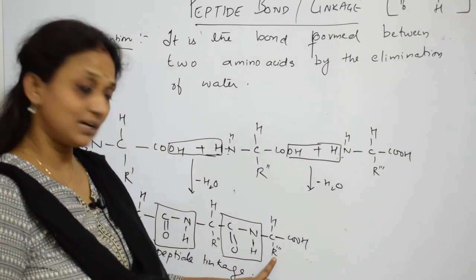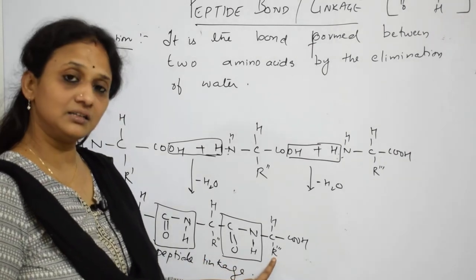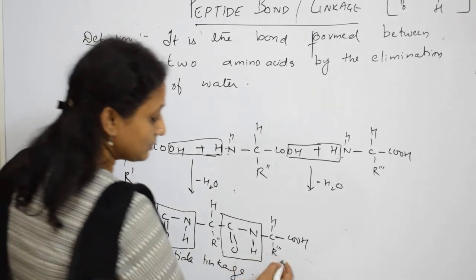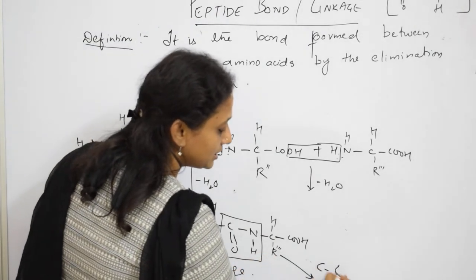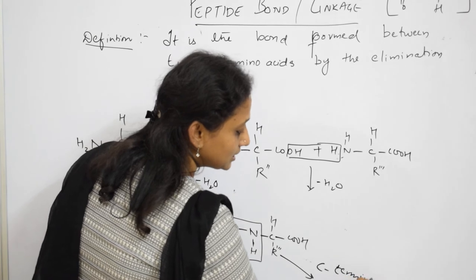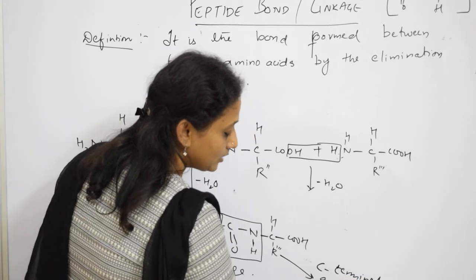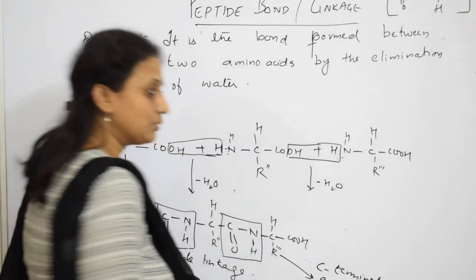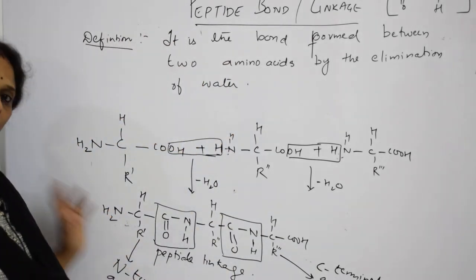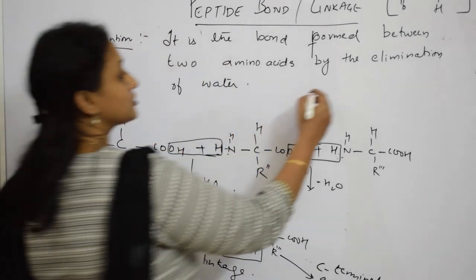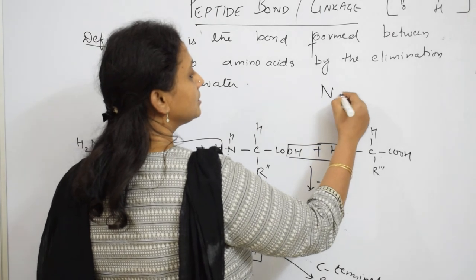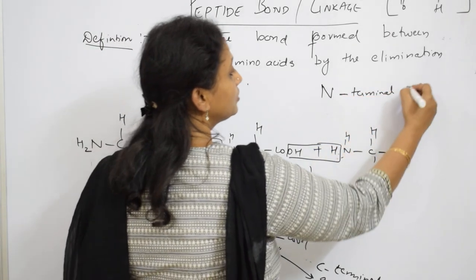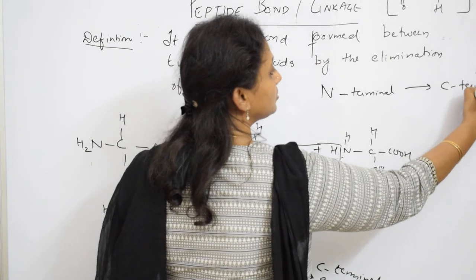The amino acid ending with the carboxylic group — marked with R triple-dash — is called the C-terminal amino acid. So you must always remember: the peptide chain starts from the N-terminal and ends at the C-terminal. This is the core concept: N-terminal to C-terminal.